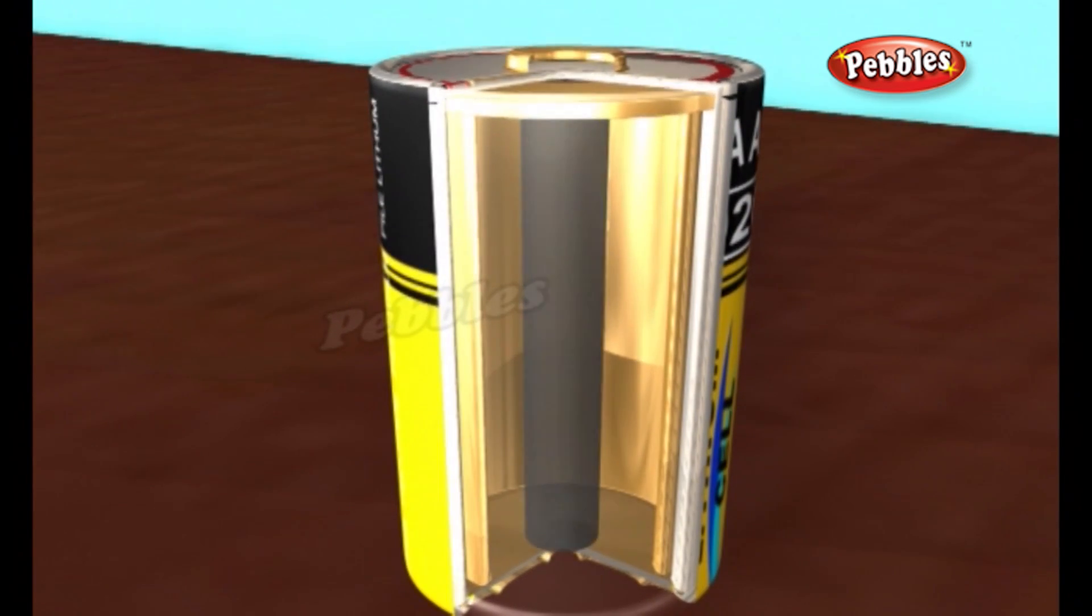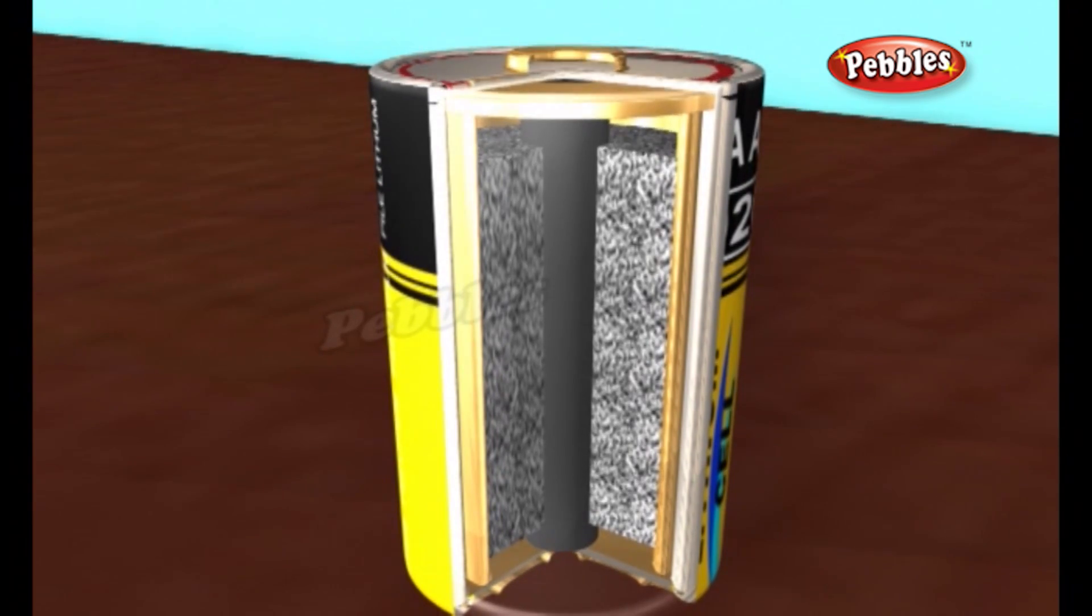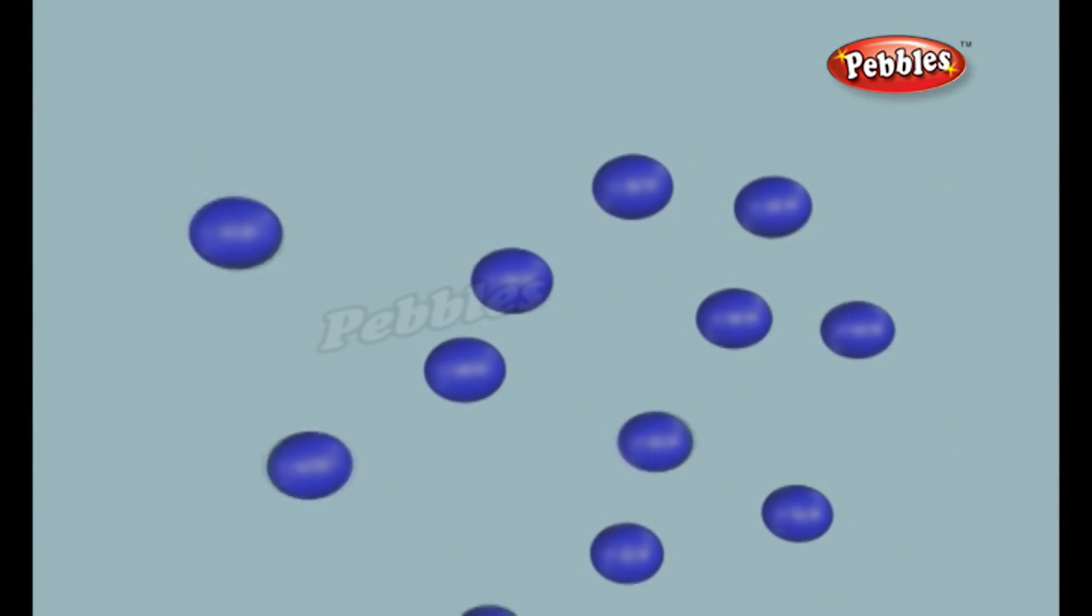A carbon rod, which is the cathode in the center of the cell, and the space between carbon rod and the zinc contains a paste of ammonium chloride and zinc chloride. The cathode is a mixture of manganese dioxide and carbon powder.